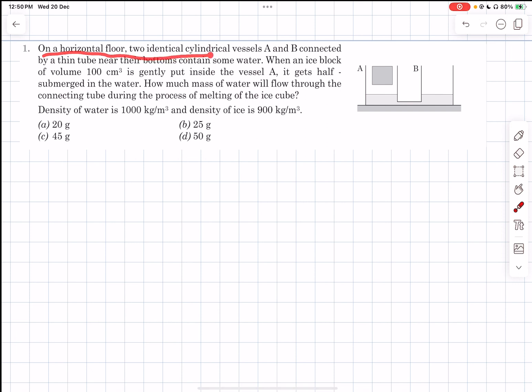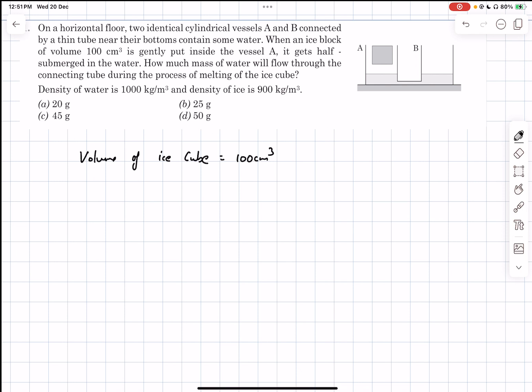On a horizontal floor, two identical cylindrical vessels A and B are connected by a thin tube near their bottom, contains some water. When an ice block of volume 100 centimeter cube is gently put inside the vessel A, it gets half submerged in water. How much mass of water will flow through the connecting tube during the process of melting of the ice cube?